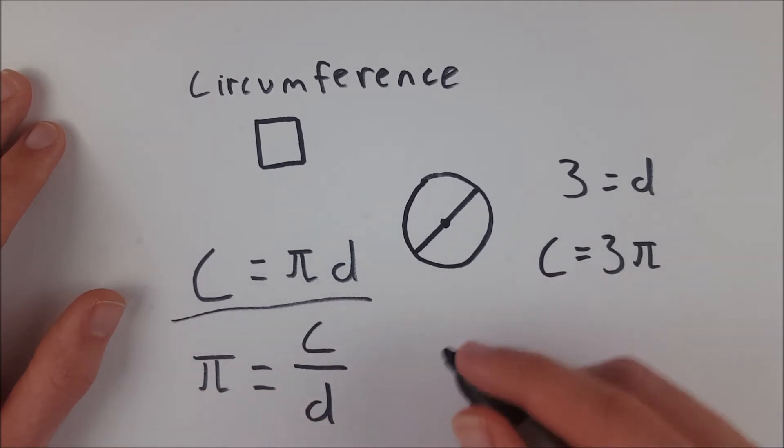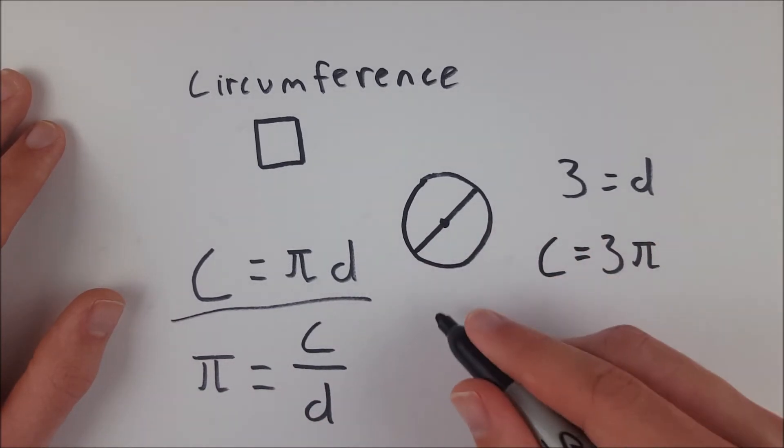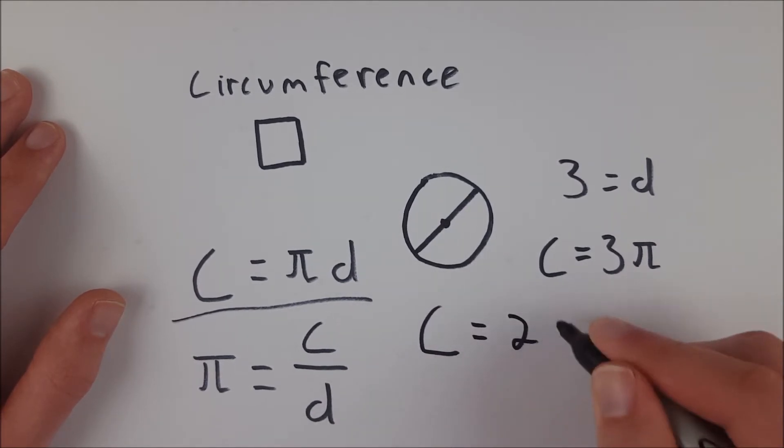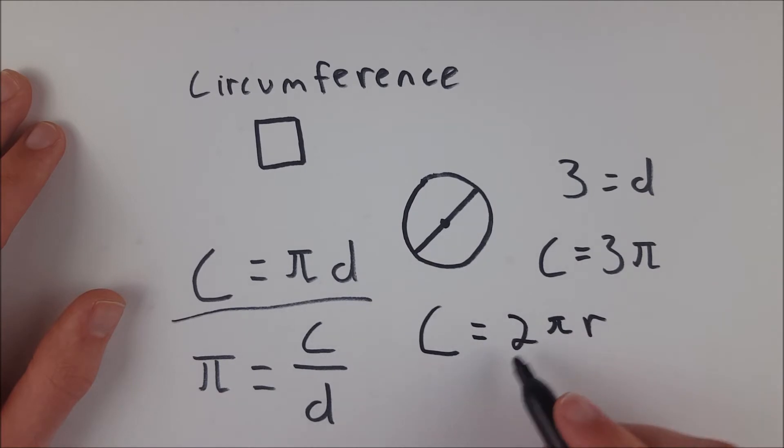Also, the diameter is equal to 2 times the radius of a circle. So you can also write circumference equals 2πr. That's pi times twice the radius.